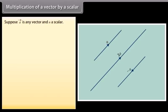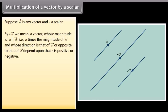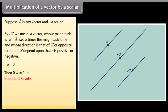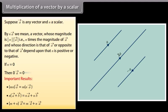Multiplication of a vector by a scalar. Suppose vector A is any vector and N is a scalar. By vector NA we mean a vector whose magnitude is N times the magnitude of vector A, and whose direction is that of vector A or opposite to that of vector A, depending on whether N is positive or negative. If N equals 0, then 0 times vector A equals zero vector. Important results: MN vector A equals M into N vector A; N into (vector A plus vector B) equals N vector A plus N vector B; (M plus N) into vector A equals M into vector A plus N into vector A.